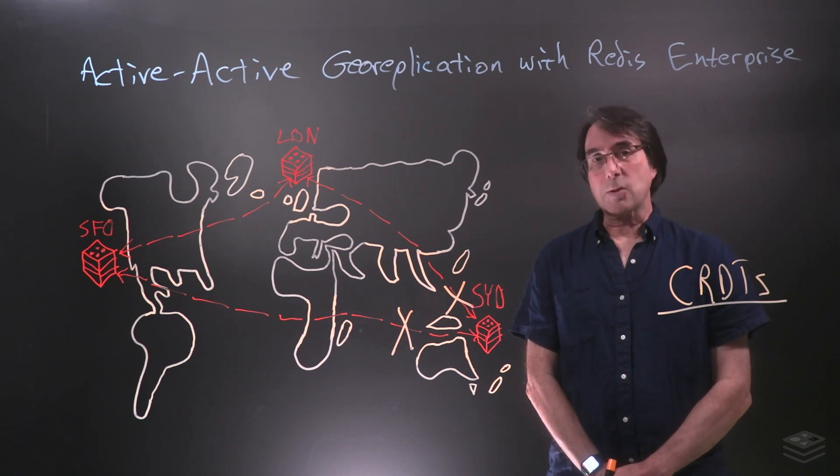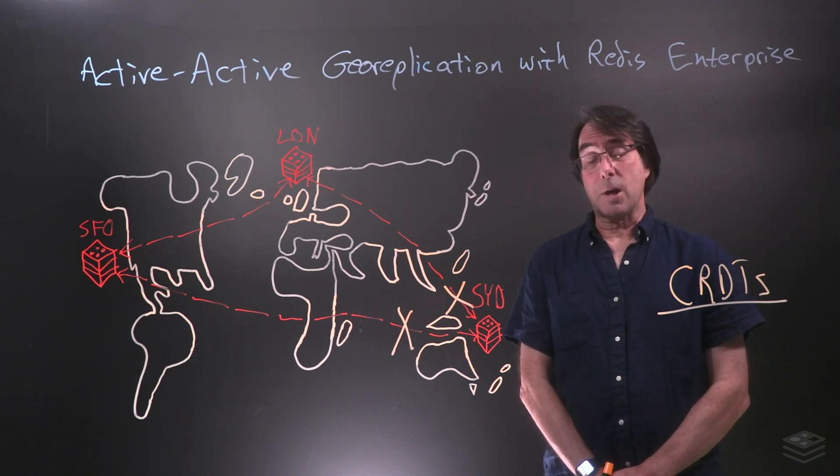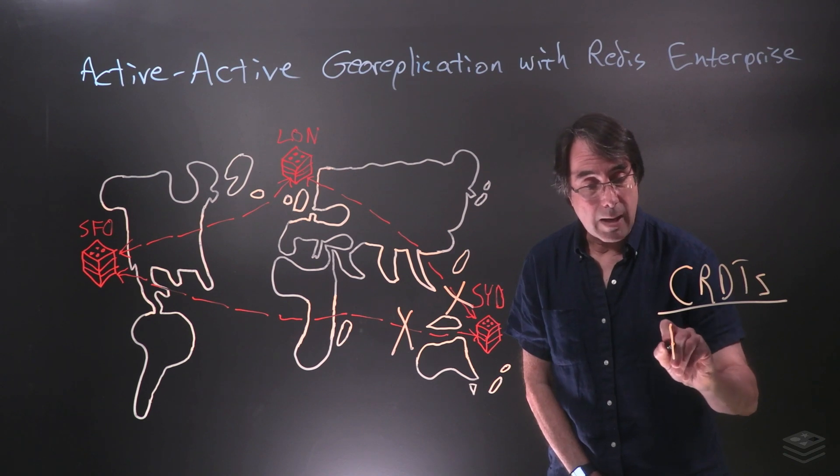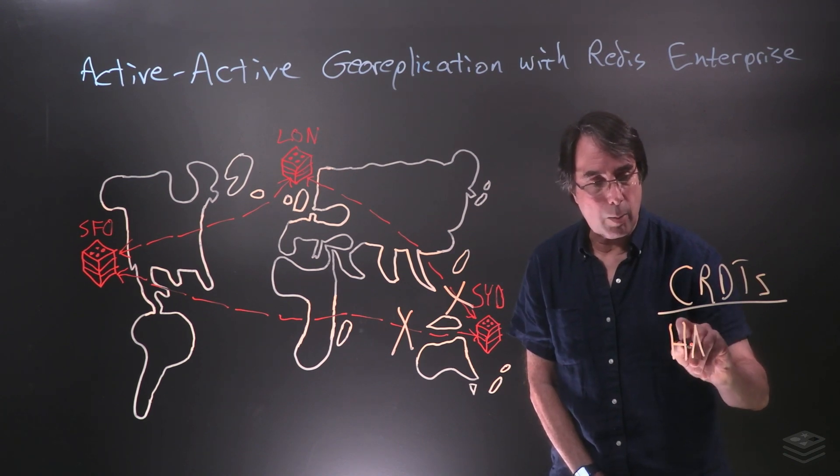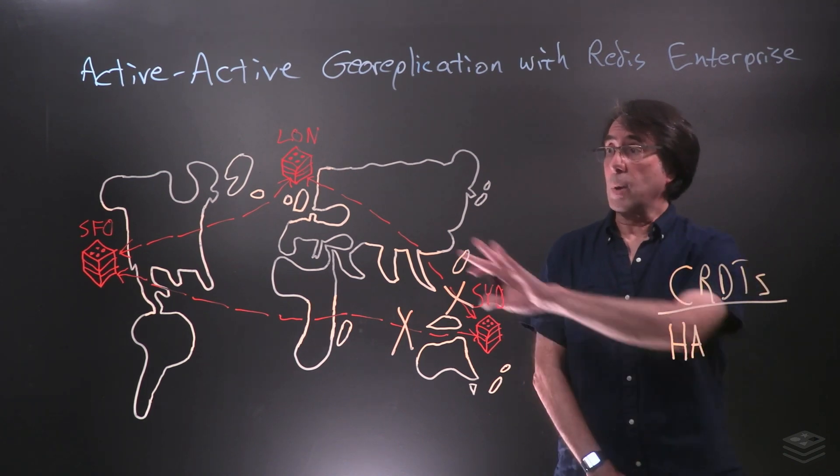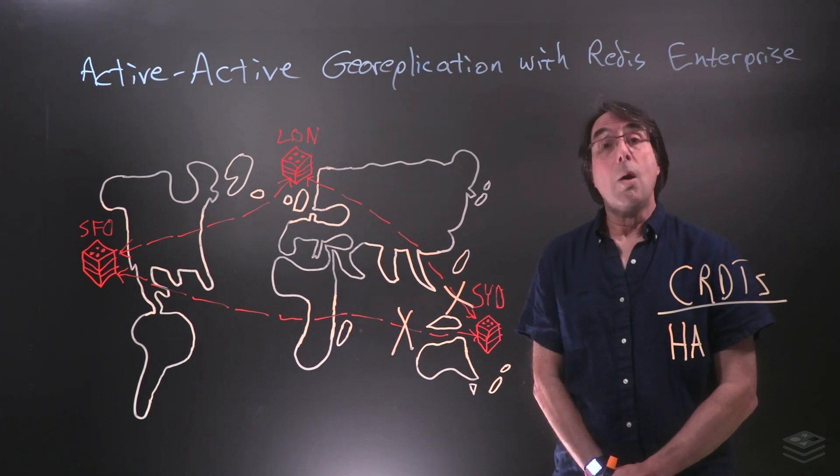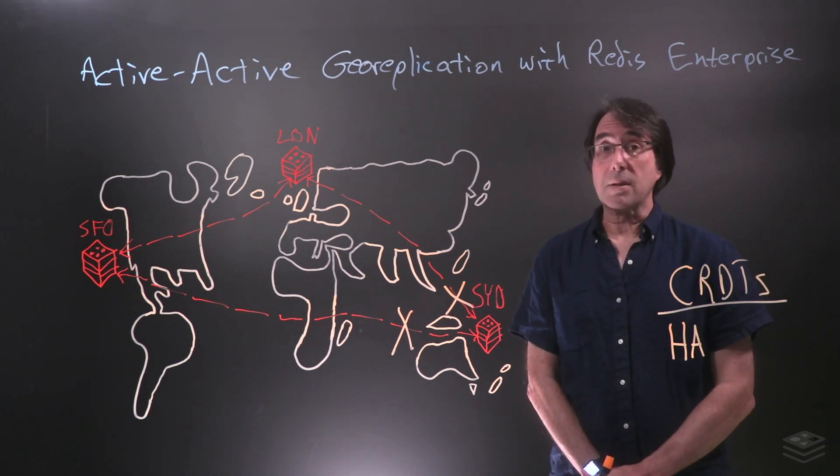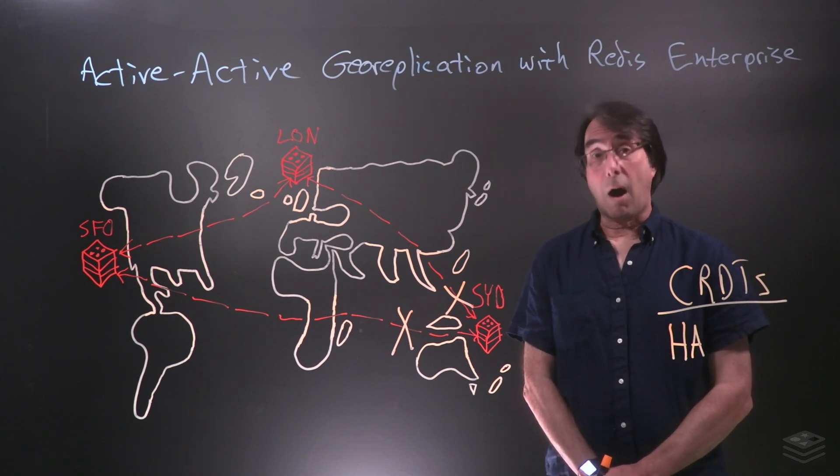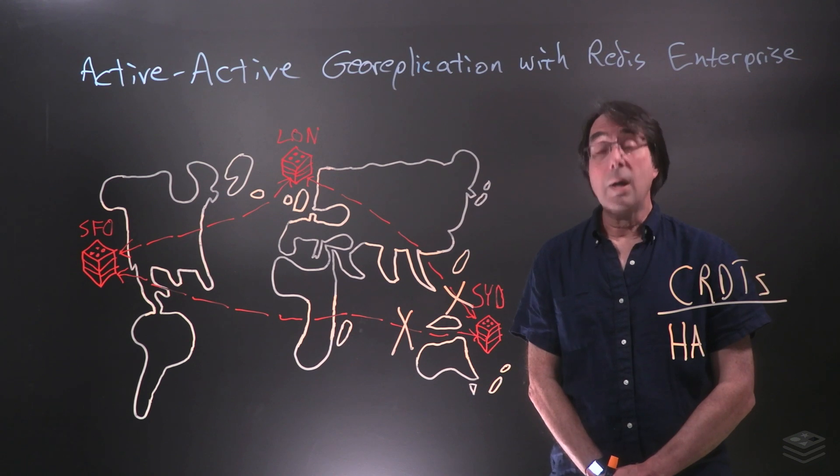Another great aspect of active-active geo-replication is that it delivers high availability. If you think of our replicas here, what we have are instantly accessible, constantly synchronized copies of your data. If any replica ever goes down, your application can immediately switch to another one and keep working.